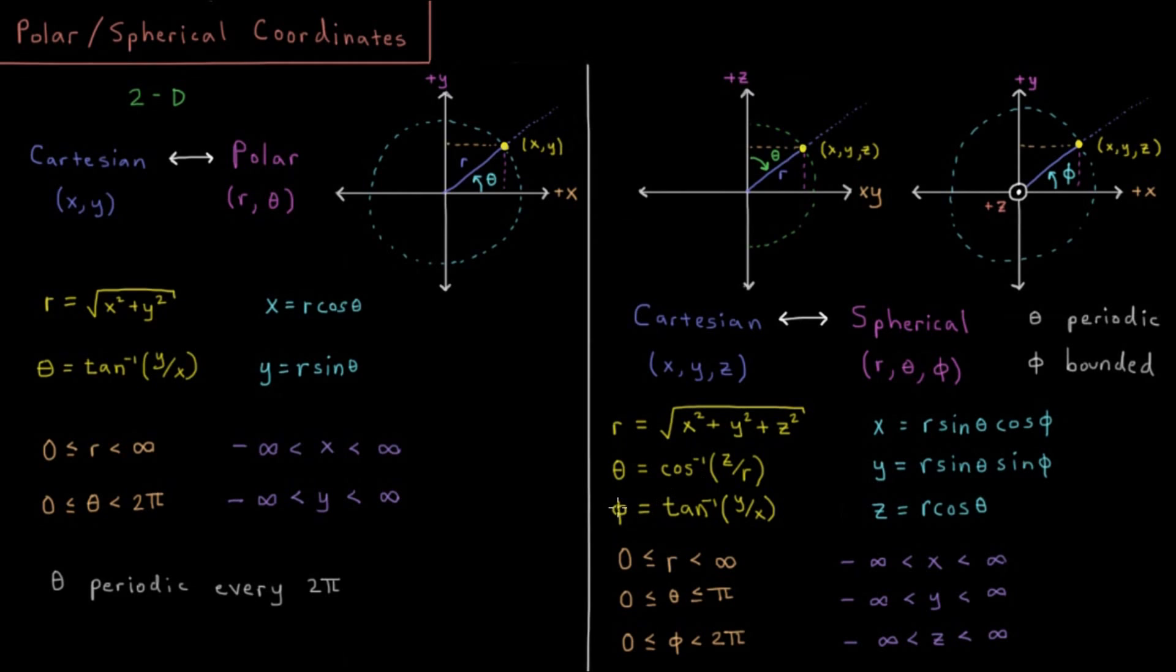Then phi, not theta, which is sort of confusing, but phi is the analog to theta in polar coordinates. Phi represents the angle in the x, y plane from the plus x axis, just as theta did in polar coordinates. So that's the arctangent of y over x, again taking care of noting what quadrant you're in.